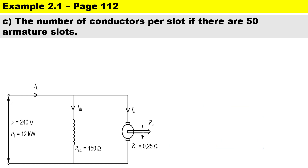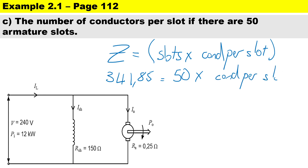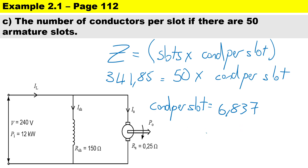The final question asks for the number of conductors per slot if there are 50 slots. The relationship is: Z = number of slots × conductors per slot. Substituting Z = 341.85 and 50 slots gives 341.85 / 50 = 6.837. Since you cannot have a fraction of a conductor, we round up to 7 conductors per slot.